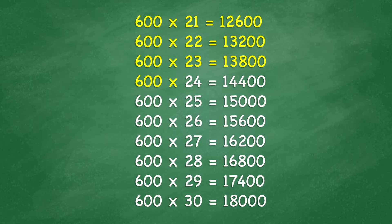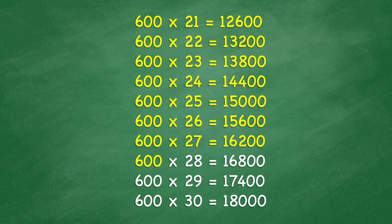600 times 25 equals 15,000. 600 times 26 equals 15,600. 600 times 27 equals 16,200. 600 times 28 equals 16,800. 600 times 29 equals 17,400.